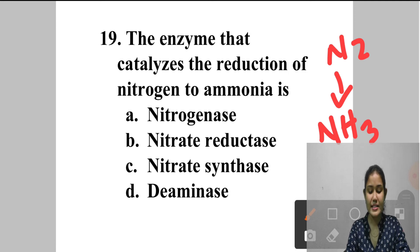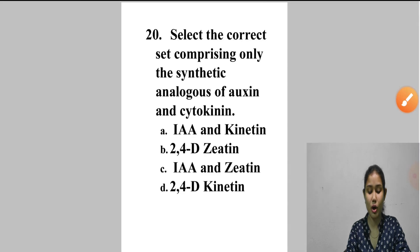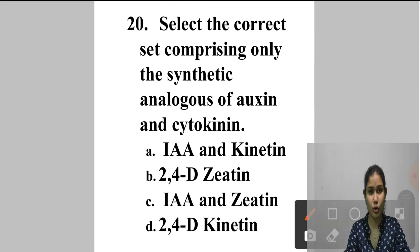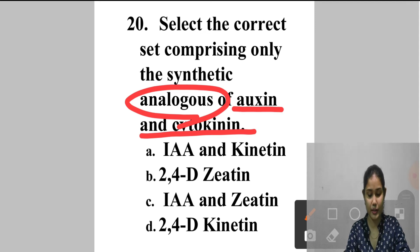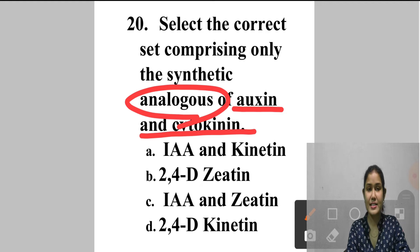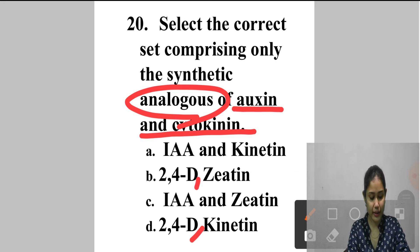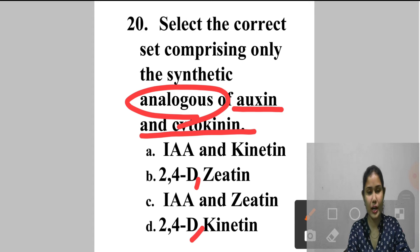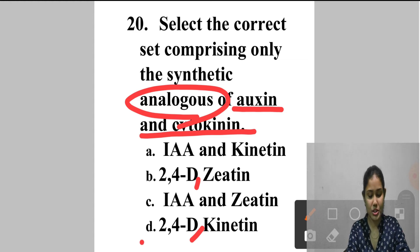Question 20: Select the correct set comprising only the synthetic analogues of auxin and cytokinin. Analogues have similar function but different structure. The synthetic analogue of auxin is 2,4-D and of cytokinin is kinetin. Answer is option D — 2,4-D and kinetin.